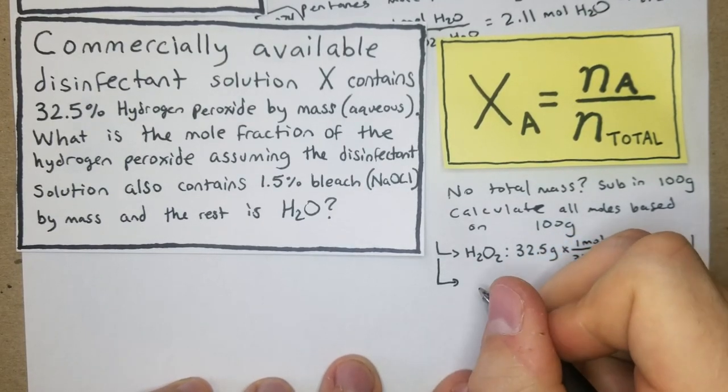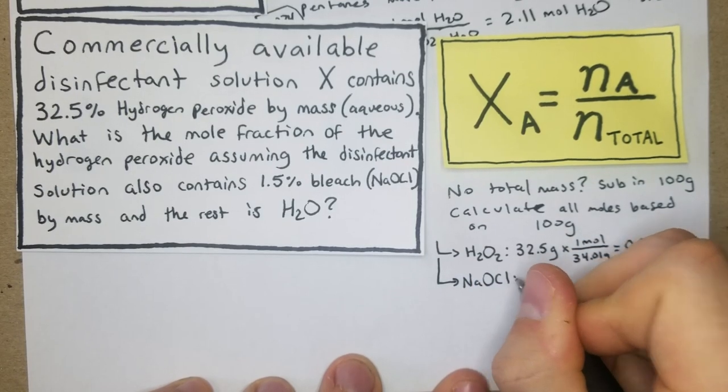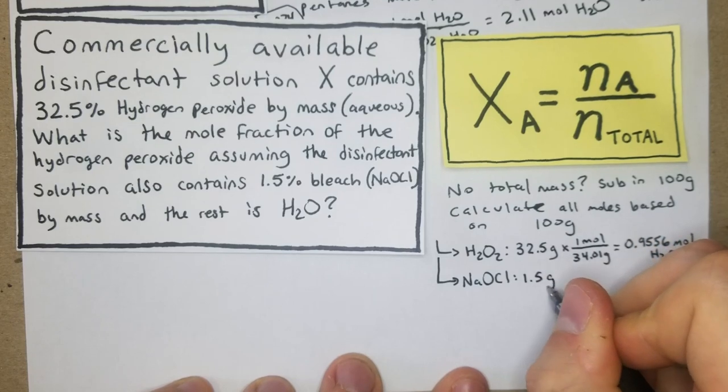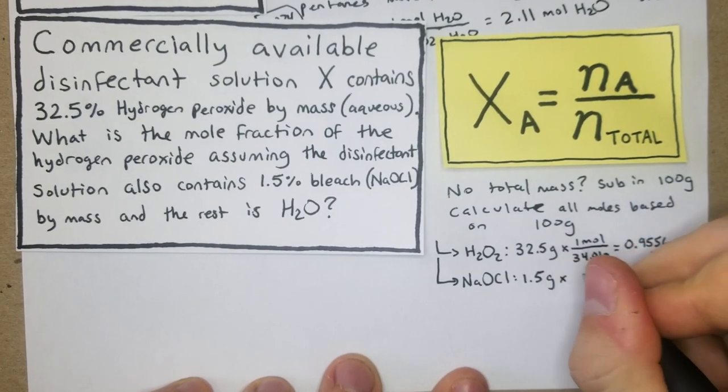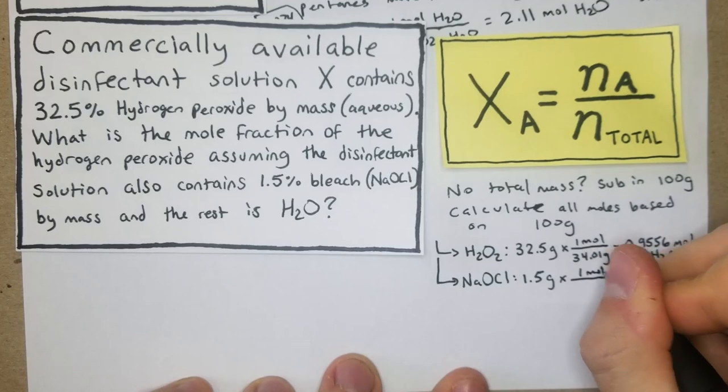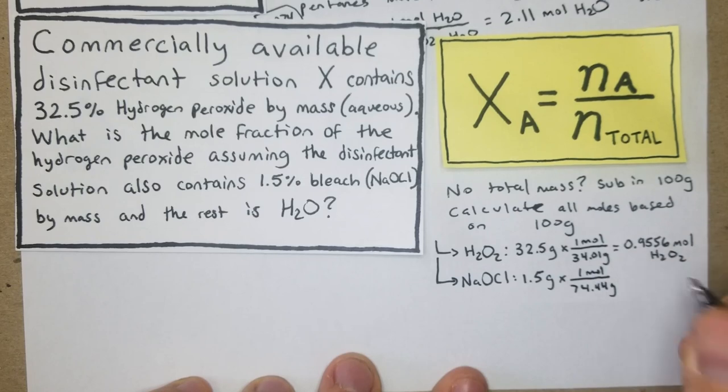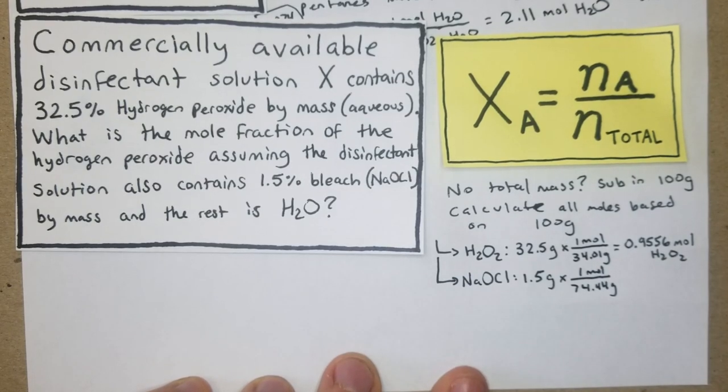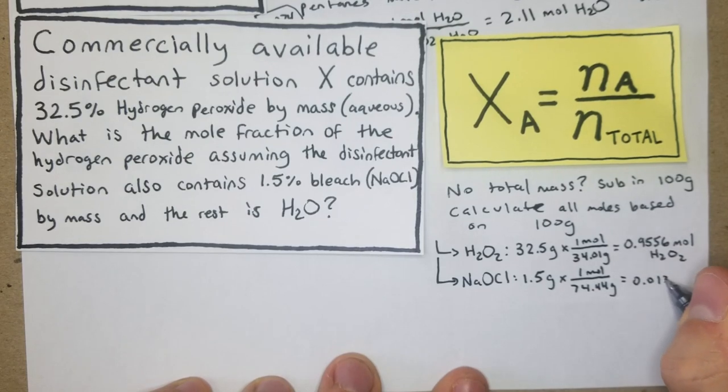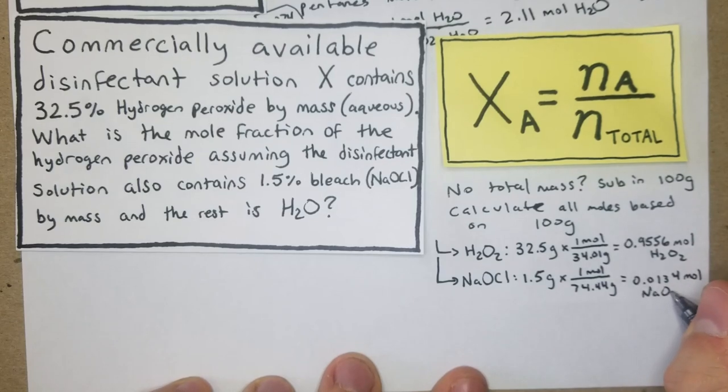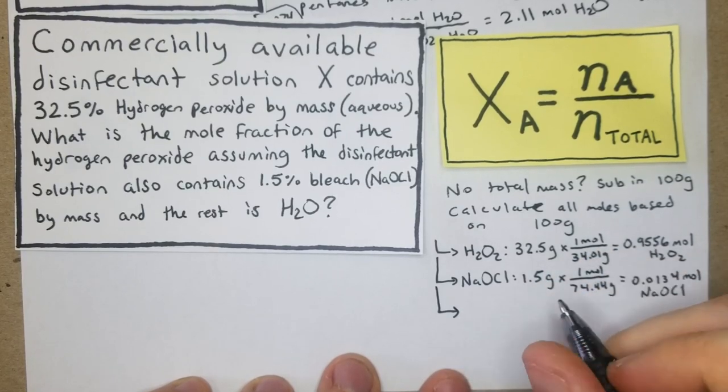Now for our NaOCl, we have 1.5 grams because 1.5 percent, and then for that we're going to multiply that by one mole over 74.44 grams. So we have 0.0134 moles of our bleach NaOCl.